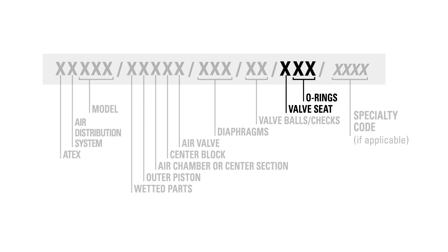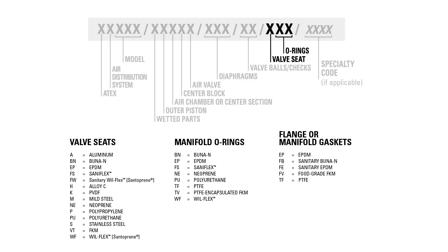The fifth section of the model designation denotes the valve seats and O-rings used in the pump. This section can be either two or three digits long depending on the seat selected. In the case of a pump with an elastomeric seat, this section will only have two digits, as elastomeric seats do not need a manifold O-ring. The Buna N, denoted as BN, and Wilflex, denoted as WF, are examples of elastomeric seats that do not need an O-ring. In the case of a pump with metallic or plastic seats, this section will be three digits: the first digit denotes the seat material and the second and third digits denote the manifold O-ring material. For example, ATF in this section would denote an aluminum seat identified by A, and PTFE O-rings identified by TF.